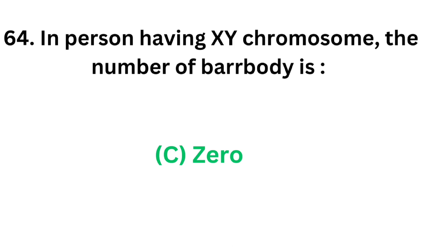The correct answer is Option C: 0. In a person having XY chromosome, the number of Barr bodies will be 0.